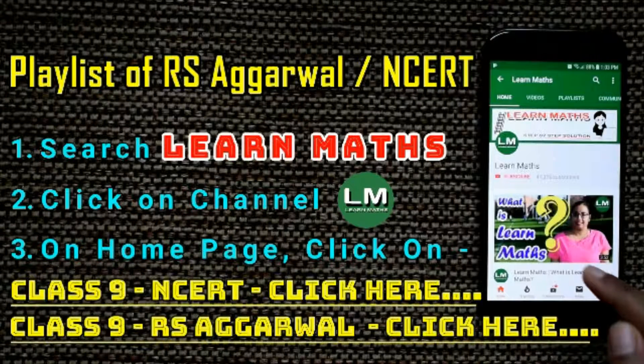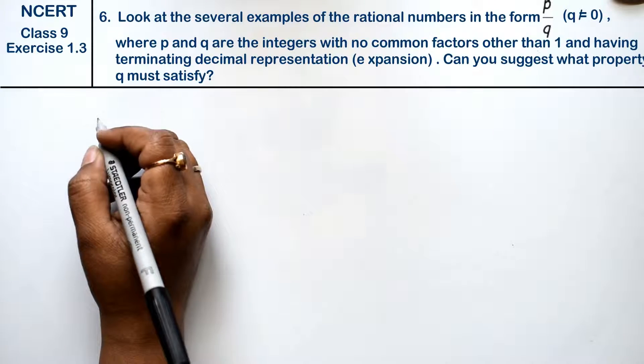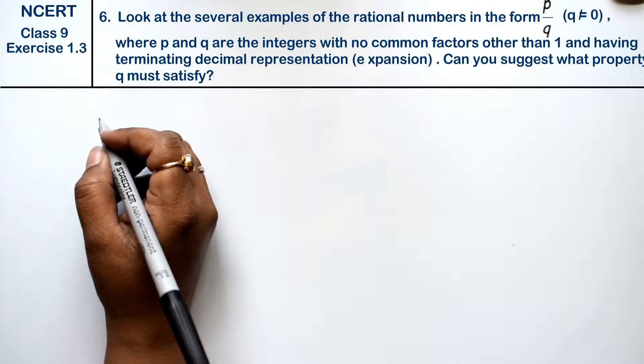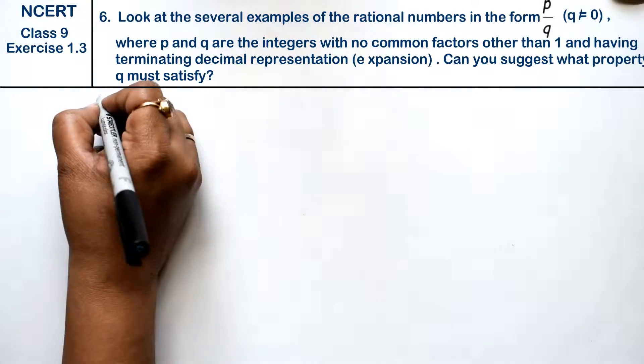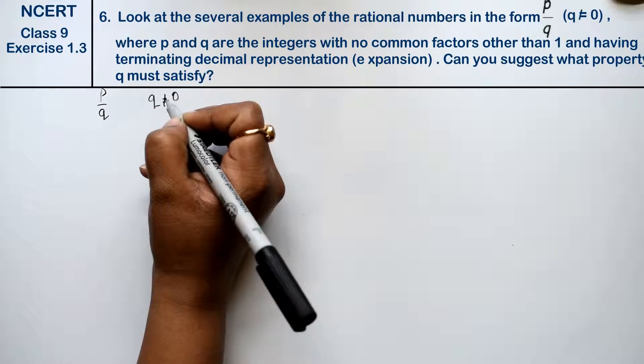Let's do question number 6 of exercise 1.3, that is number system. Question number 6 is: look at several examples of rational numbers in the form of p upon q. We know rational numbers are in p upon q where q is not equal to 0.